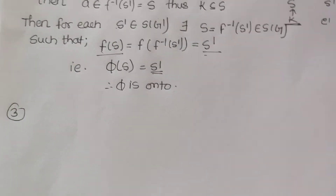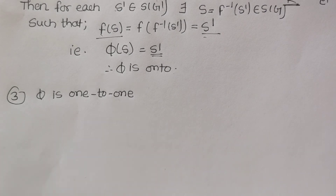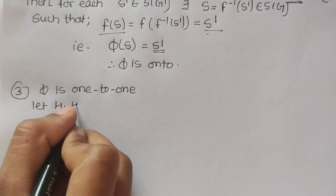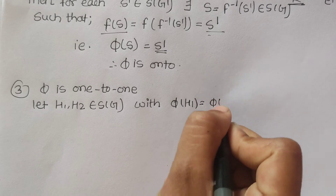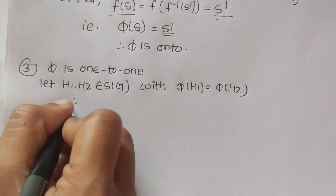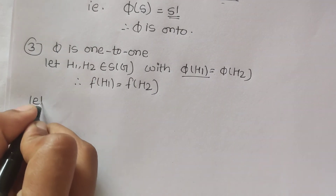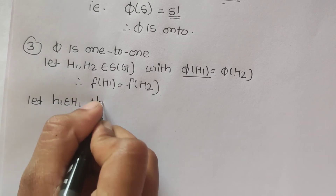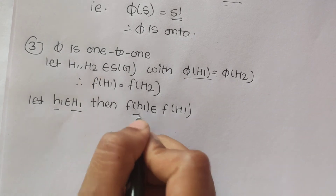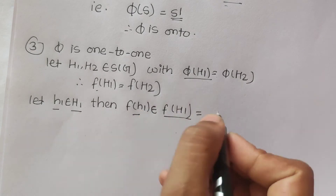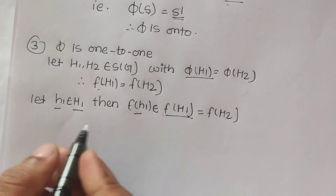Now let's show that φ is 1-to-1. We need to show that if φ(S1) = φ(S2), then S1 = S2. If h1 belongs to H1, then its image belongs to f(S1). And if f(S1) = f(S2), similarly there exists h2 in H2 whose image belongs to f(S2).